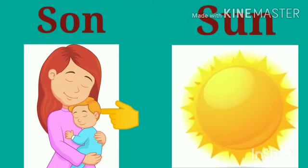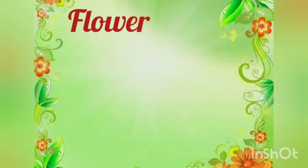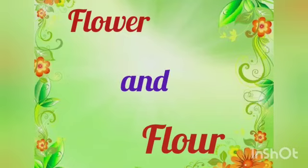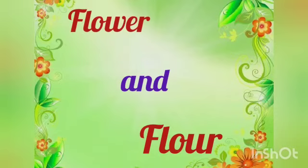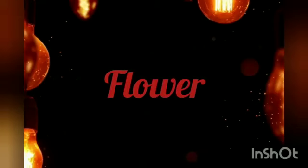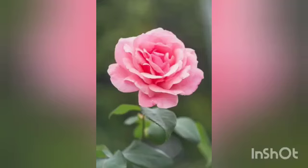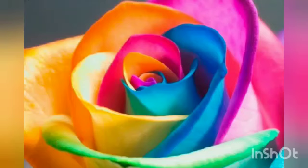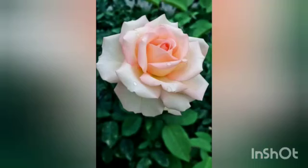Now I hope you got the difference between s-o-n (son) and s-u-n (sun). Next words are f-l-o-w-e-r (flower) and f-l-o-u-r (flour). Both are pronounced as 'flower'. Let's start with f-l-o-w-e-r (flower). See kids, this is the image of a beautiful rose flower.